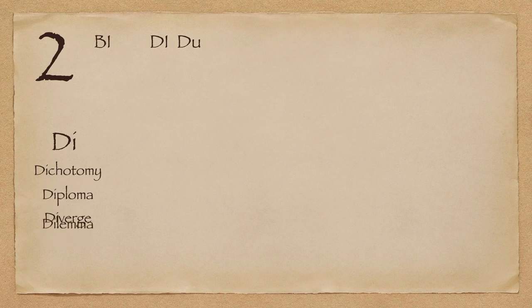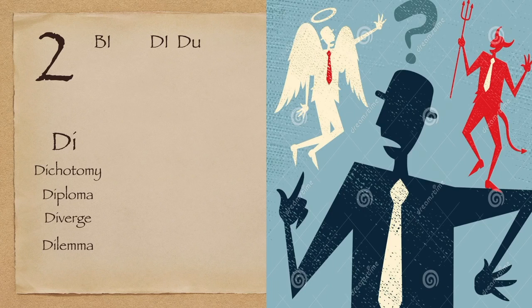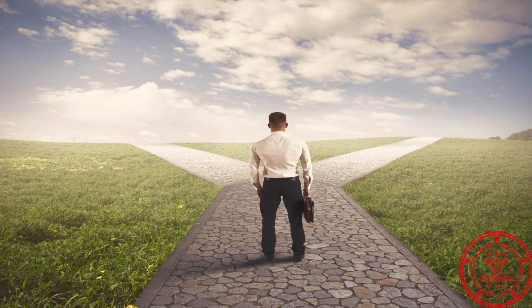Next up is dilemma — a situation in which a difficult choice has to be made between two or more alternatives, especially ones that are equally undesirable. Di is two and lemma is a premise or reason. So having two reasons, being confused between two options, is a dilemma. For example, should you marry Rita or should you marry Sita? Or should you make a career in sports or go for your MBA? Interestingly, the Hindi word duvidha is very similar — du is two, and the connection shows how these languages are deeply connected.